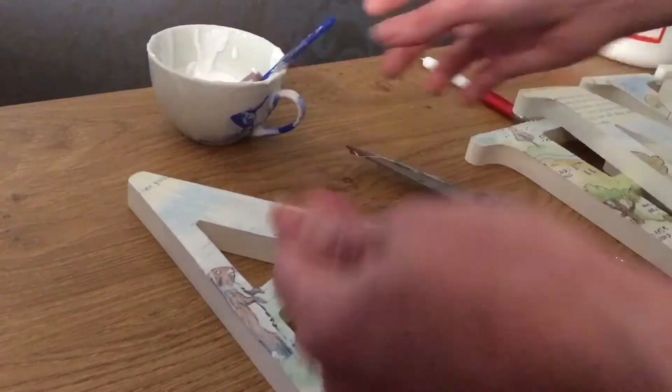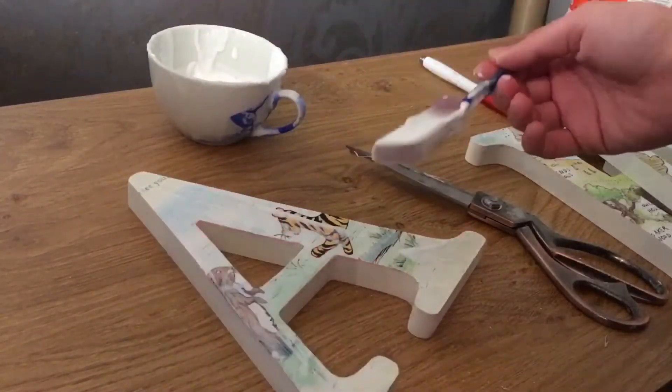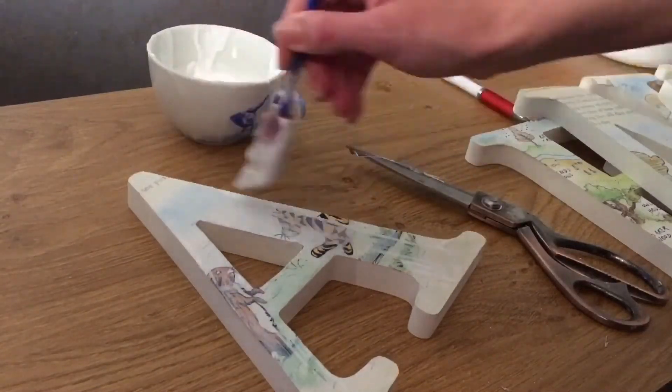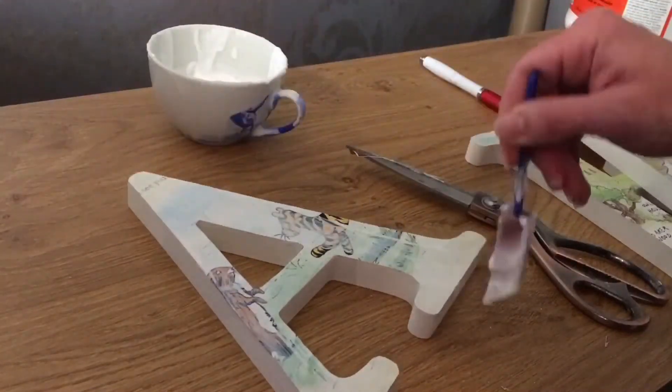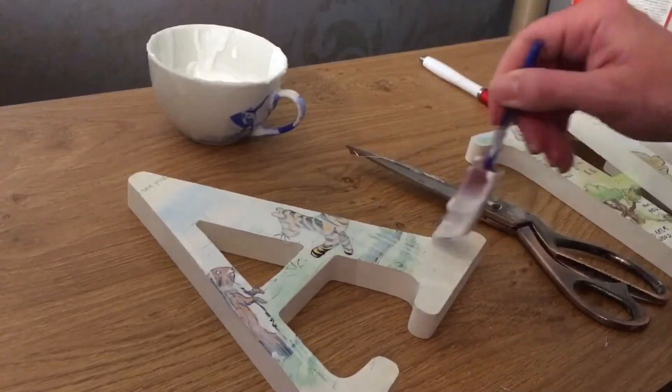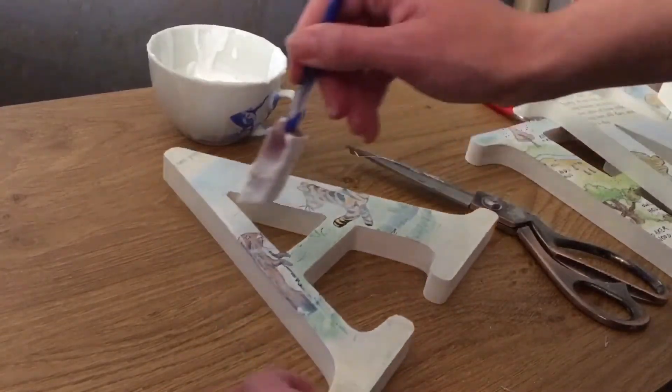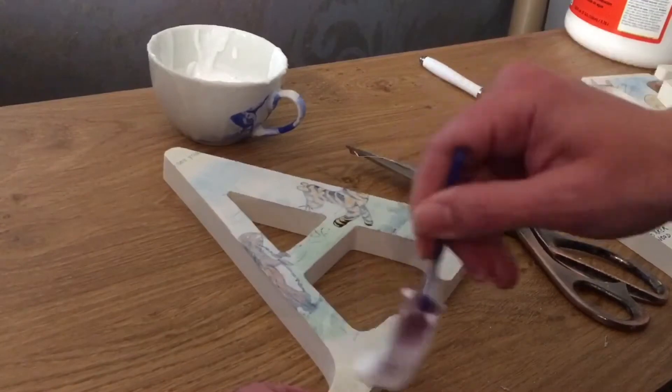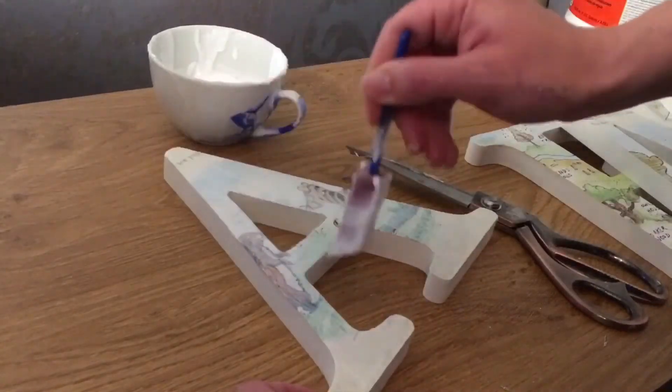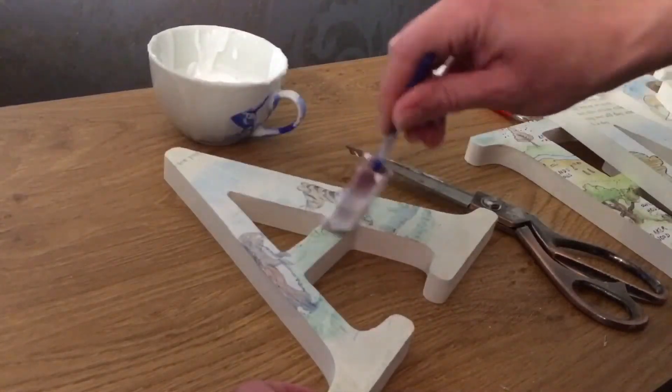If glue also goes into the letter, make sure you wipe it off because it will dry onto the wood and it will make that piece of wood look shiny, whereas the others it doesn't. It looks matte. I've used the matte spray paint anyway, but even if you use a gloss, if glue goes onto the wood, that section of the wood will look different.